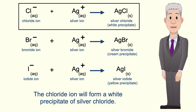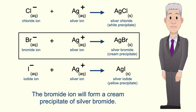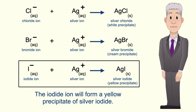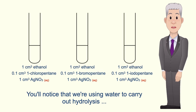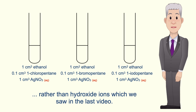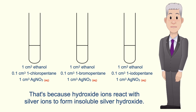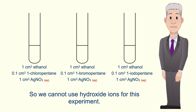The halide ion will then react with the silver ions to form an insoluble precipitate of silver halide. The chloride ion will form a white precipitate of silver chloride. The bromide ion will form a cream precipitate of silver bromide. And the iodide ion will form a yellow precipitate of silver iodide. In each case we time how long it takes for a precipitate to form. We're using water to carry out hydrolysis rather than hydroxide ions because hydroxide ions react with silver ions to form insoluble silver hydroxide, so we cannot use hydroxide ions for this experiment.